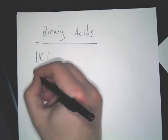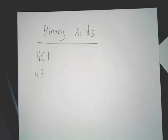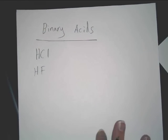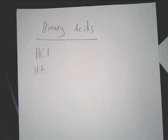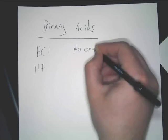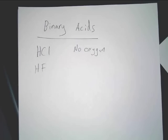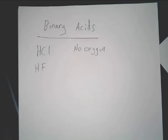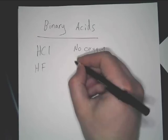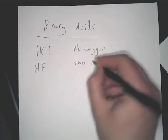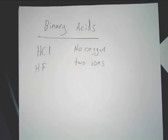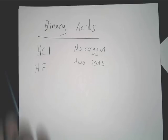Let's look at binary acids. There are a couple key things. First, there's no oxygen present — it would not be a binary acid if it had oxygen. At the same time, there are two ions only, so two ions present. That's why it's called binary — binary meaning two, like binary code: it has a one and a zero.